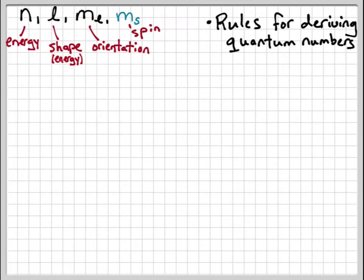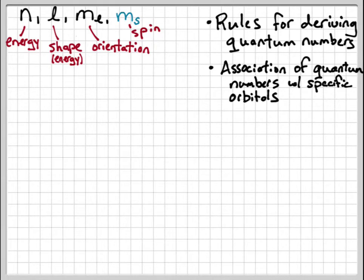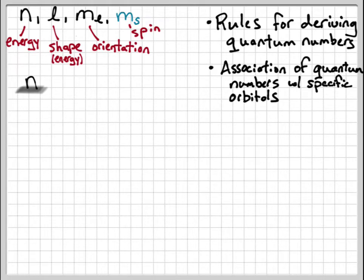In this next part we're going to go over some practical rules for deriving the quantum numbers — in other words, what are the rules for determining what quantum numbers are possible — and then we're also going to look at how we associate these quantum numbers with specific orbital types. We're going to start to look at the quantum numbers as shorthand notation for the electrons in these various orbitals.